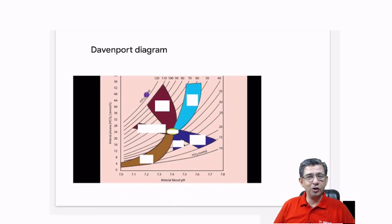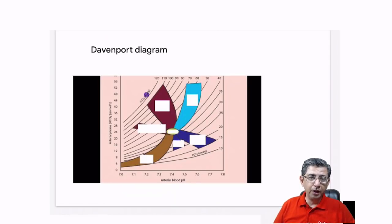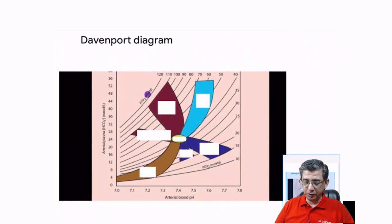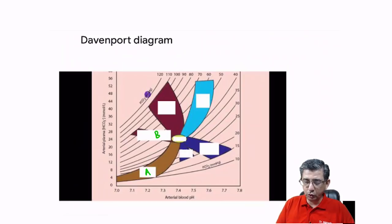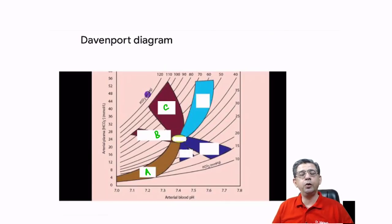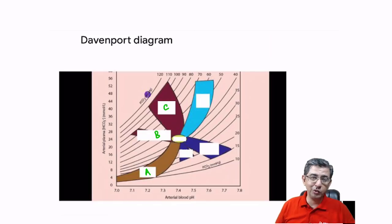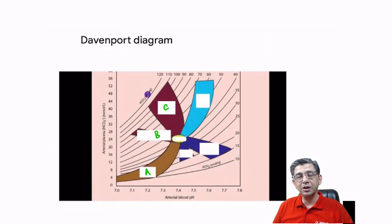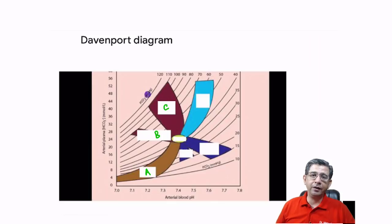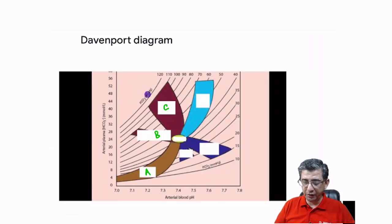Welcome back. This is Dr. Marva, and today we'll be talking about the Davenport diagram. In the exam, they can give you a schematic diagram with some random markings and ask you to identify whether it represents metabolic acidosis, respiratory acidosis, respiratory alkalosis, or metabolic alkalosis. In the subsequent slides, I'll explain the logic behind this flow diagram.